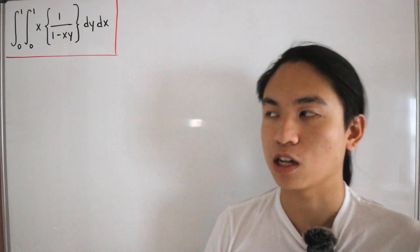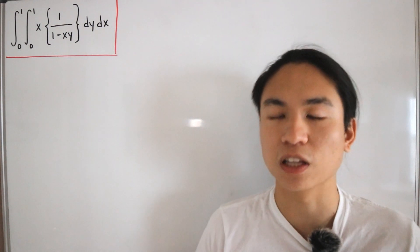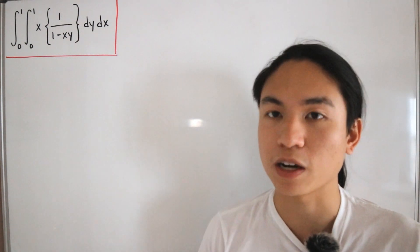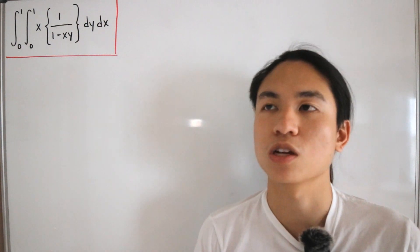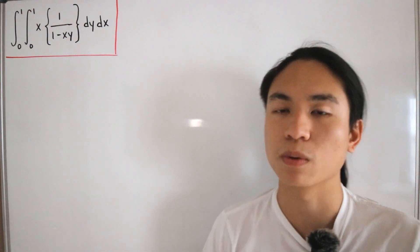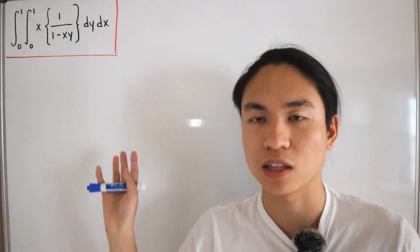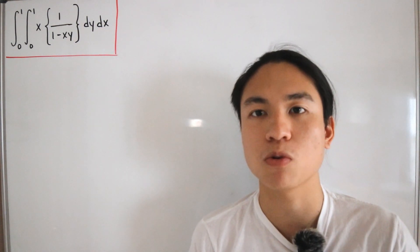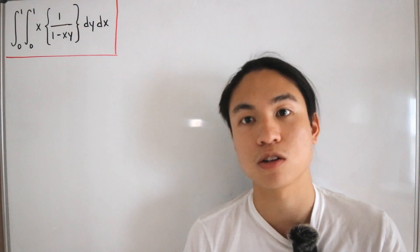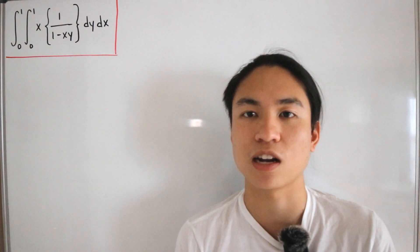To outline the approach: there is a result we're going to use as part of the process, and without showing it the video would lack verification or validity. It's important to take a closer look at it before evaluating the main integral. We'll evaluate a helper integral first as part of a proof — a tool we'll use later — which is valid for all positive real numbers m.